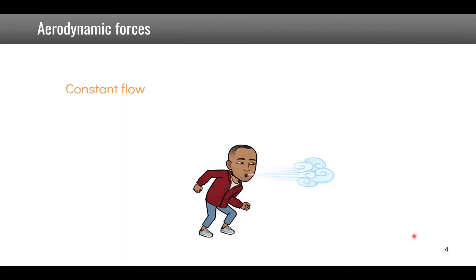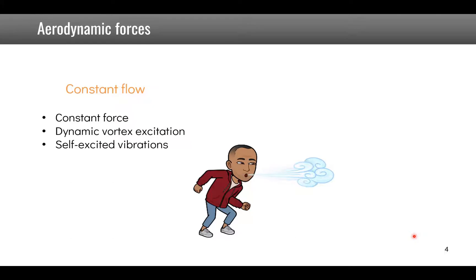Now in a constant flow, the first part, you have of course a constant force but you can also have some dynamic effects which we will discuss in this video. The first one is dynamic vortex excitation. The second one is self-excited vibration, mainly instabilities in the form of galloping, divergence and flutter.